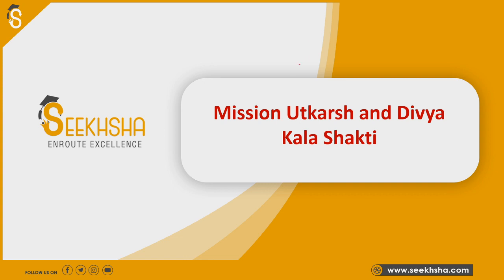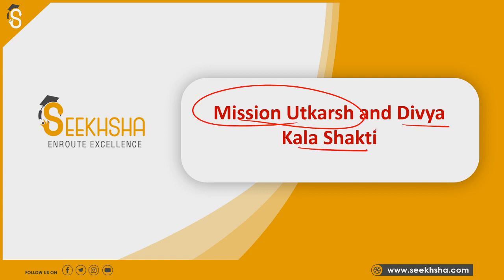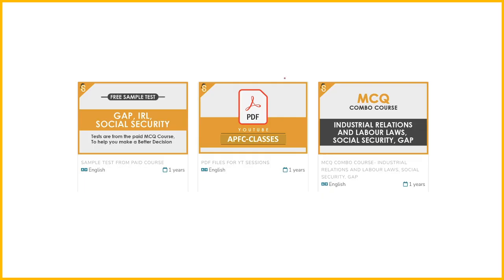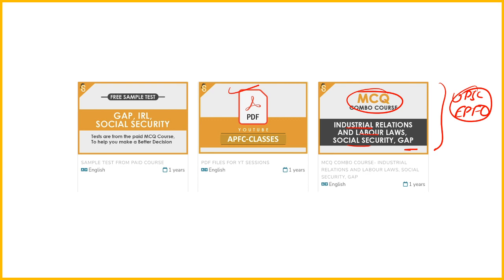We have to discuss two missions: Mission Uthkarsh and Divya Kala Shakti. Before discussing them, PDF files from YouTube lectures are linked in the description. You can also find the MCQ combo course covering industry relations, labour law, and social security. For UPSC and EPFO, you can use these resources and there is 50% off on the MCQ combo course.